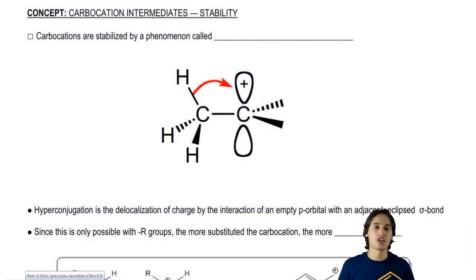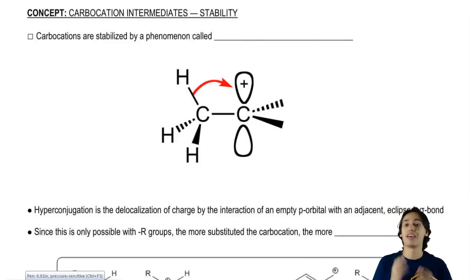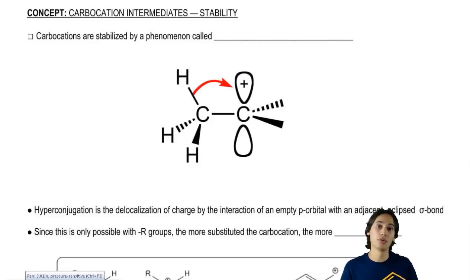Remember that carbocations are just carbons that have three bonds instead of four, so they're always going to have an empty orbital. That empty orbital, we give it a positive charge because it's missing a bond.